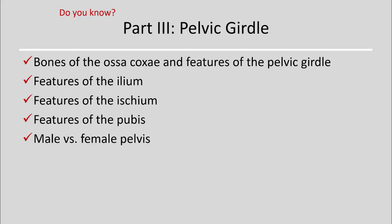For the pelvic girdle, you should know the bones of the os coxae and features of the pelvic girdle as a whole. Know the individual features of the ilium, ischium, and pubis using proper terminology, and know the differences between the male and female pelvis.